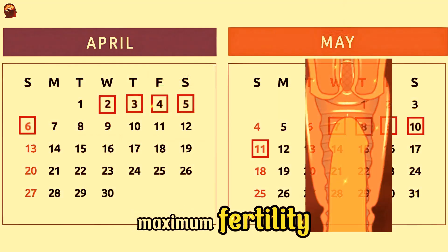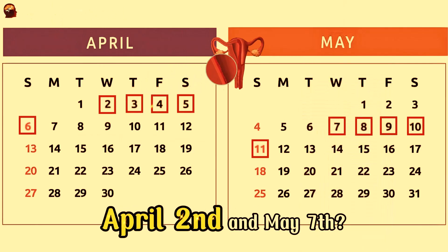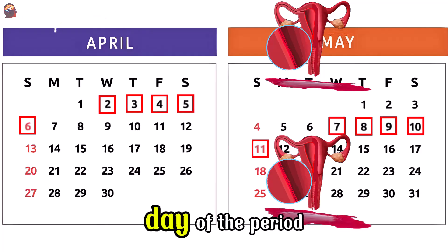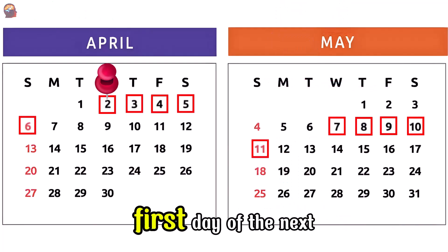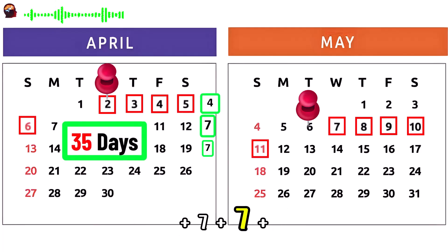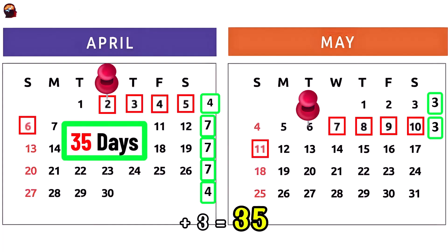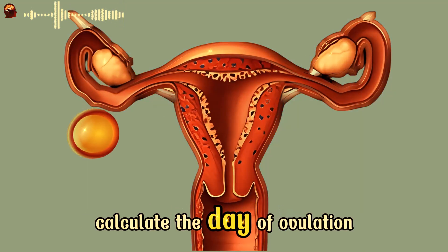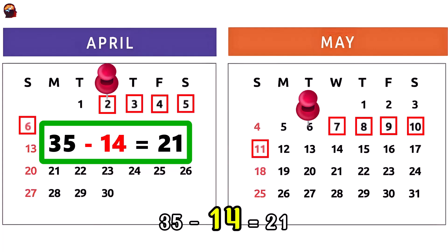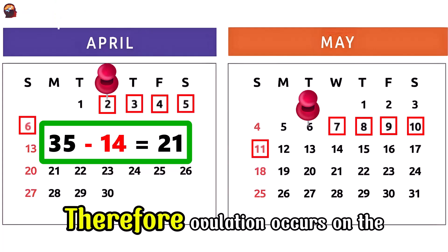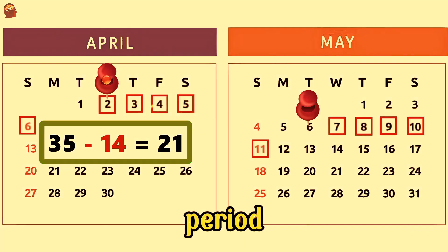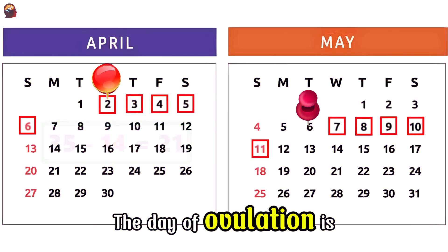What are the days of maximum fertility if the period occurred on April 2nd and May 7th? First, we calculate the length of the menstrual cycle. We count from the first day of the period, April 2nd, to the day before the first day of the next period, May 6th. Do the math — you get 35 days: 4 plus 7 plus 7 plus 7 plus 4 plus 3 plus 3 equals 35. The next step is to calculate the day of ovulation. We subtract 14 days from the cycle length: 35 minus 14 equals 21. Therefore, ovulation occurs on the 21st day of the cycle. Count 21 days from April 2nd — the day of ovulation is April 22nd.